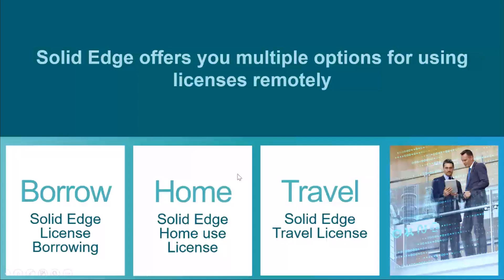A home use license is intended for a person using a production license at work to load Solid Edge on a machine at home. The travel license is an additional 30 days of licensing that you can take on your machine to travel or work from home — it starts January 1st and tracks how many days you use it.